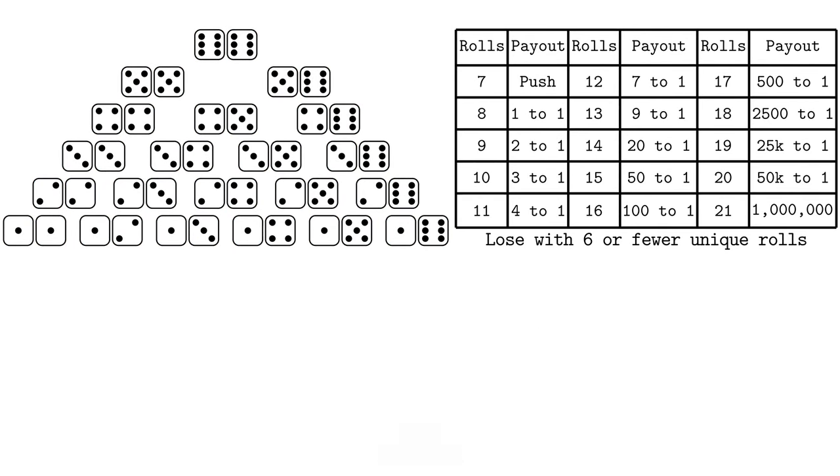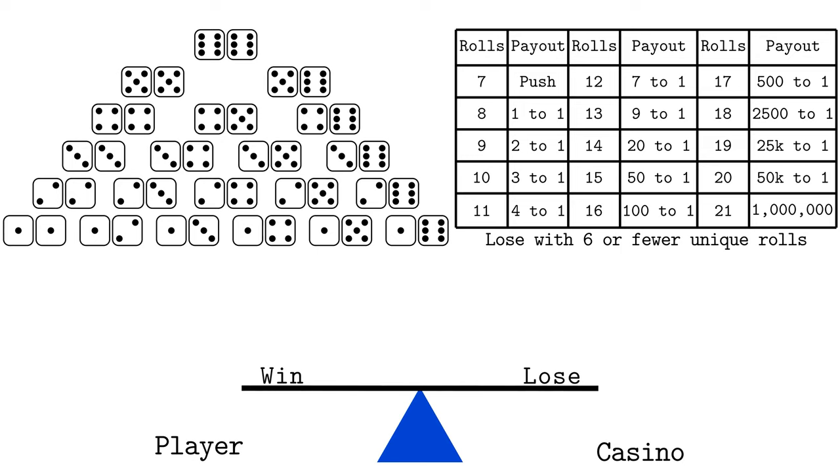Casino games, all of them, are meant to make you the player feel like you could win, but statistically speaking, you will lose in the long run. What does your mathematical intuition say about this pyramid dice game, given what you observed from those examples? Do you think the odds are stacked against the player by a lot or by a little?